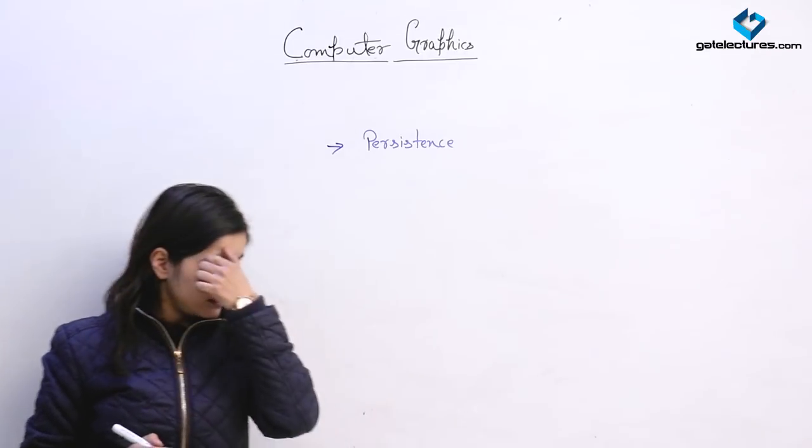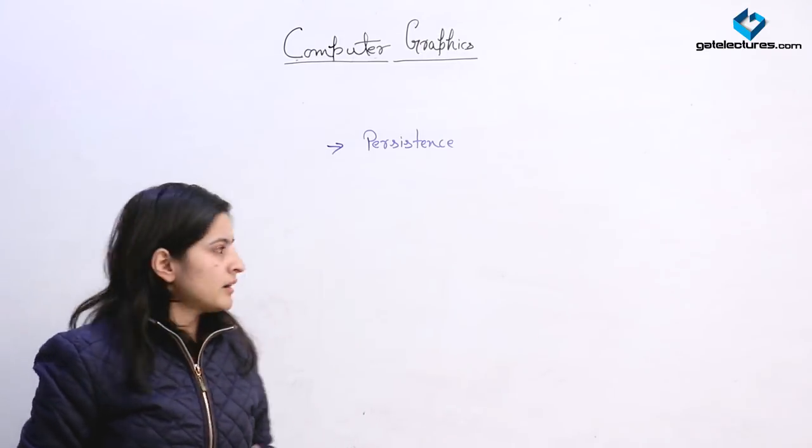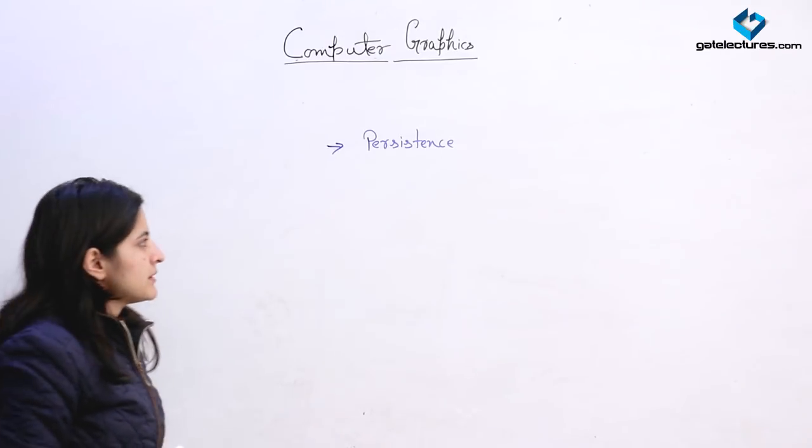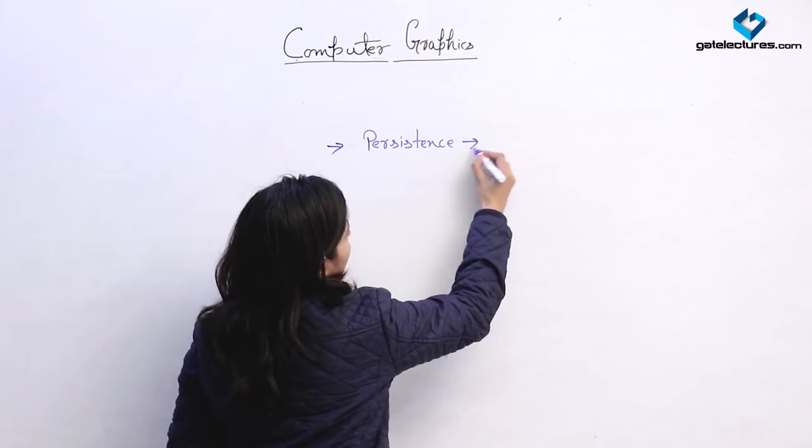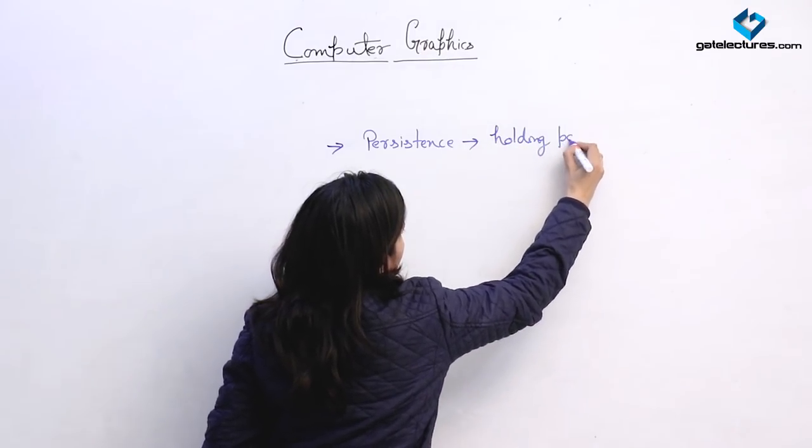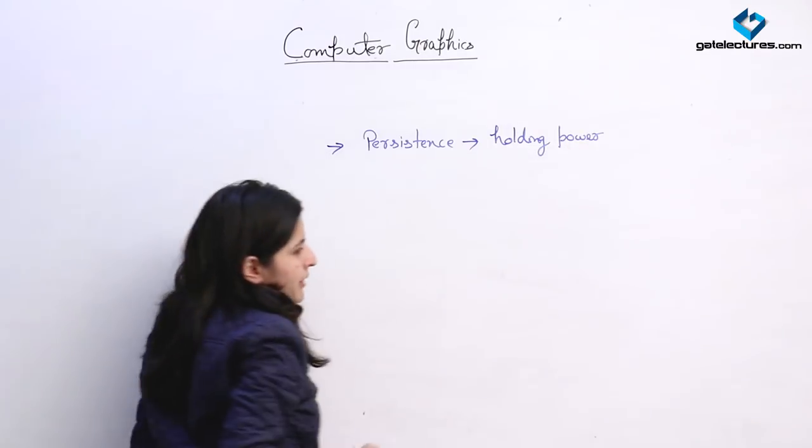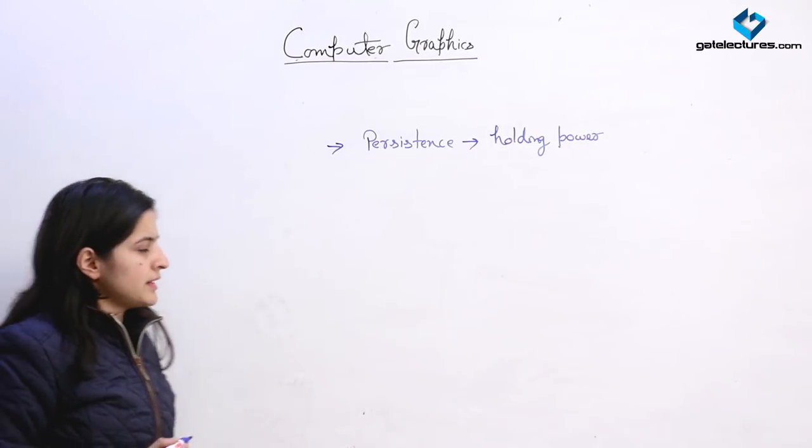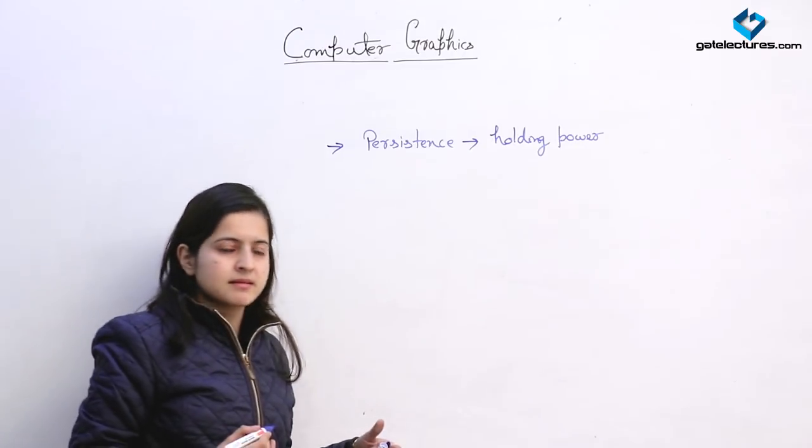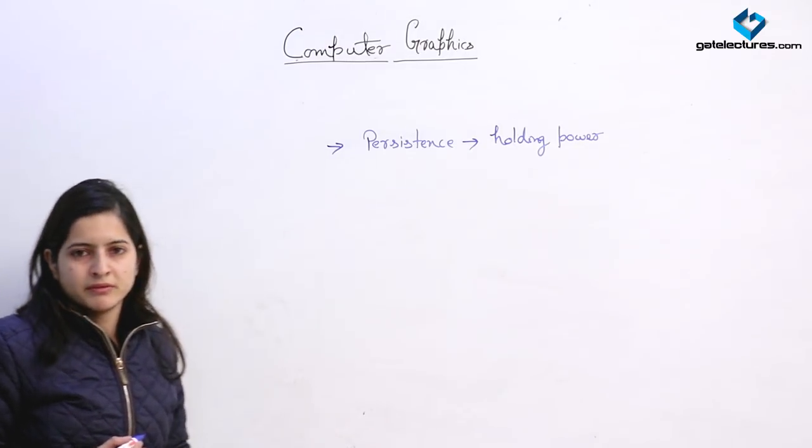Persistence power of an electron in a phosphorous screen is the power of an electron to hold its intensity. We can also call it the holding power. The holding power of an electron in a phosphorous screen before the next electron strikes the screen is called the persistence power.